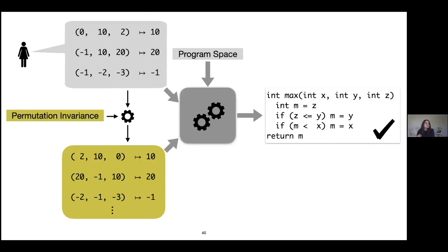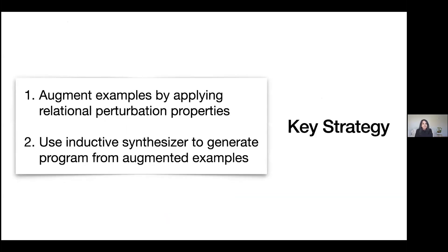Because of how we define these properties, we can apply this strategy to any relational perturbation property: take a user-provided set of examples, apply the property to obtain a larger set of perturbed examples, and feed that to the synthesizer. So we have a simple two-step strategy: first perturb and augment the examples by applying relational perturbation properties, then use an existing synthesizer to generate a program from this augmented set of examples.